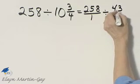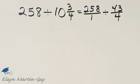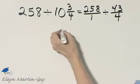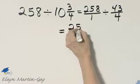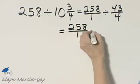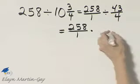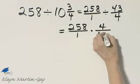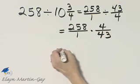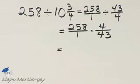That's 43 over the original denominator of 4. So this is 258 over 1 times the reciprocal of the second fraction and the reciprocal is 4 over 43. So let's go ahead and multiply.